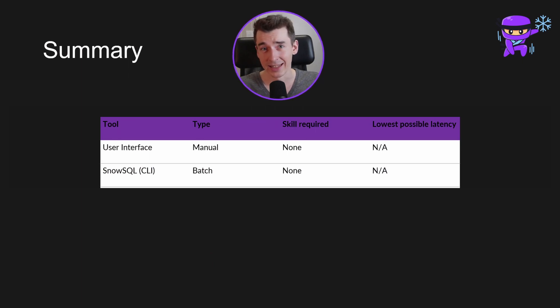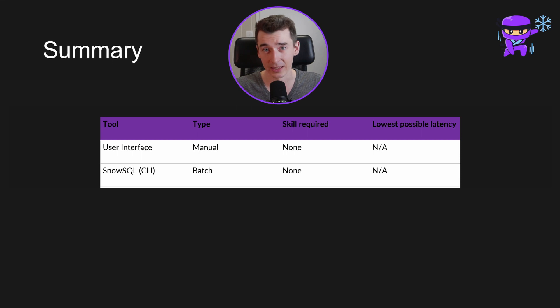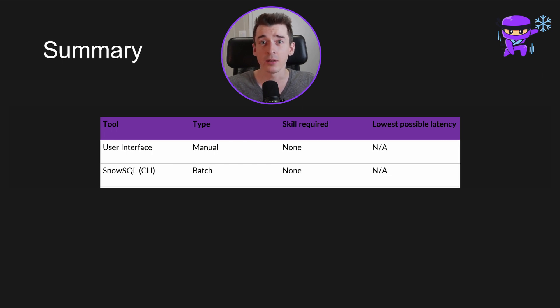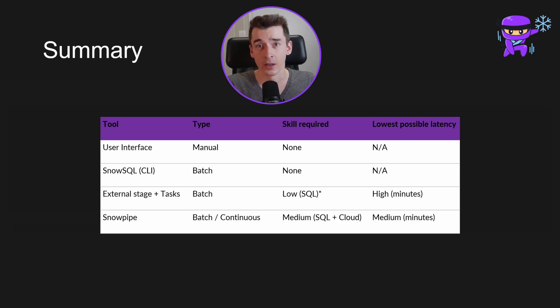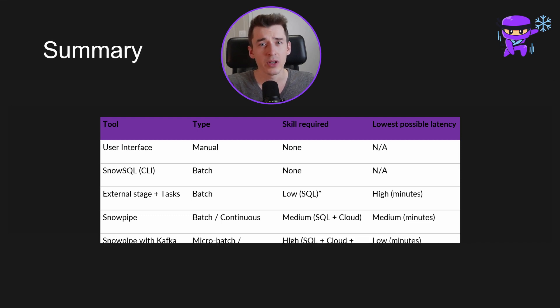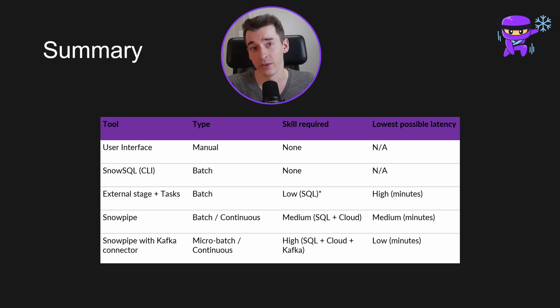Let's make a quick summary of the different data loading options in Snowflake. Data loading through the user interface and SnowSQL are mostly manual operations, but are the easiest and quickest options. To build data pipelines and automate loading, you need more skill-intensive methods. The most classic way is to load data on fixed schedules using external stages and tasks — it comes with the lowest skill requirement, especially if your data is already in the cloud. Continuous data loading with Snowpipe is designed for frequent, small file-based data loads, providing a perfect balance between required skills and latency. With the Kafka connector, you can speed up this process, but at the cost of maintaining the Kafka connector.